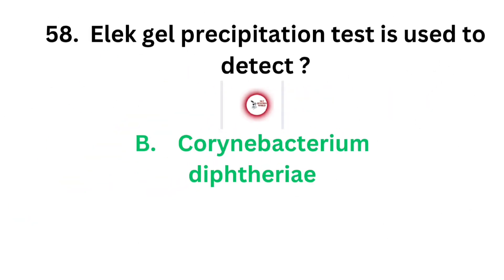The correct answer is option B, Corynebacterium diphtheriae. Elek gel precipitation test is used to detect Corynebacterium diphtheriae.